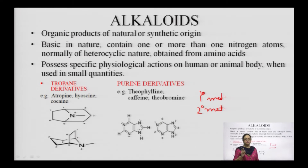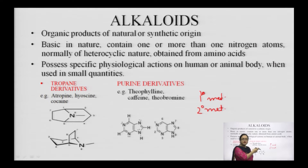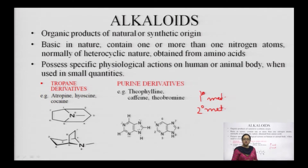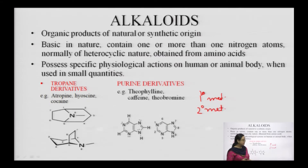We will first discuss the various classifications of alkaloids, because in this lecture I will discuss the tropane derivative atropine and the purine derivative caffeine. You need to know the basis on which we classify alkaloids, so we will discuss that first.